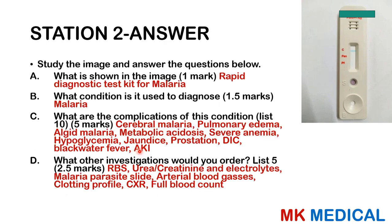This is a rapid diagnostic testing kit for malaria — a Plasmodium falciparum antigen testing kit — used in the diagnosis of malaria. Complications include cerebral malaria, pulmonary edema, algid malaria, metabolic acidosis, severe anemia, hypoglycemia, jaundice, prostration, DIC, blackwater fever, and acute kidney injury. Other investigations include random blood sugar, urea/electrolytes/creatinine, malaria parasite slide, arterial blood gases, clotting profile, chest X-ray, and full blood count.